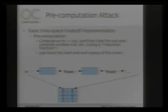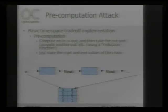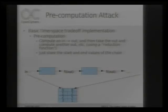The basic time-space trade-off implementation works similarly: you have your one-way function, feed it through, and on the other side you create a mapping of your output back to another input — that's called a reduction function. Then you feed it through another one-way function and create a long chain of these.